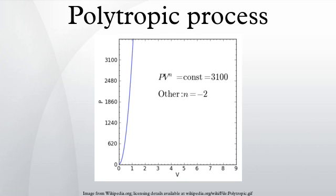N equals 0, N equals 1, N equals gamma, N equals infinity processes and all values of N in between. Hence the equation is polytropic in the sense that it describes many lines or many processes.